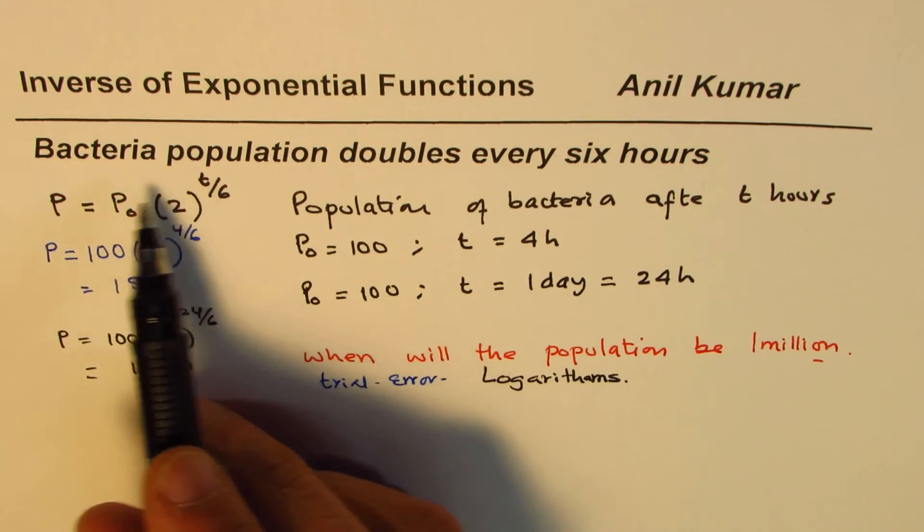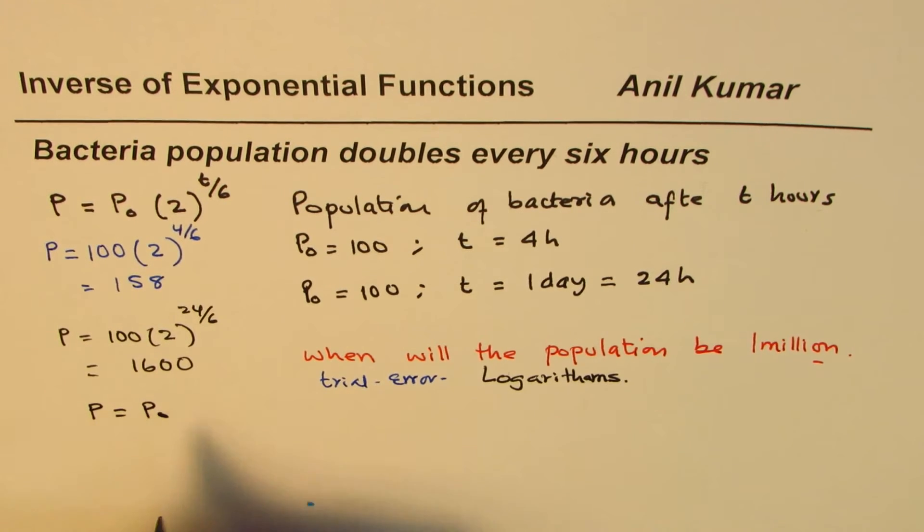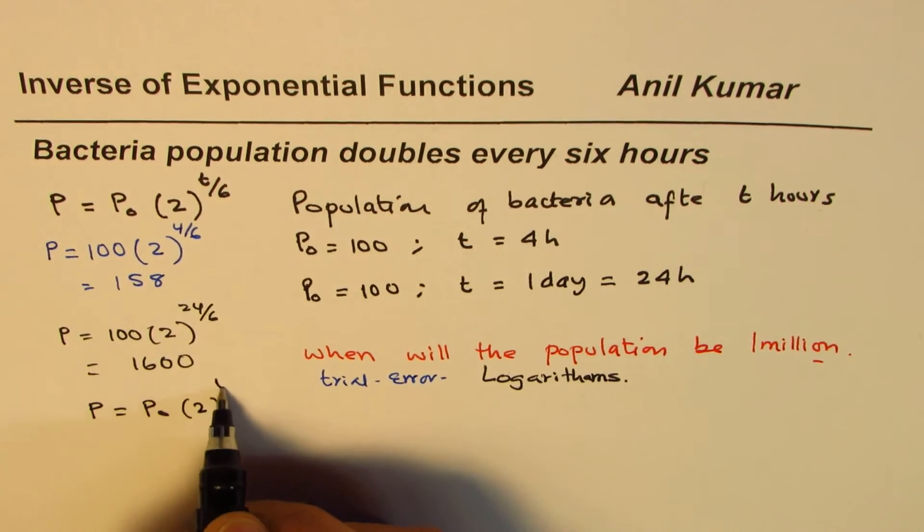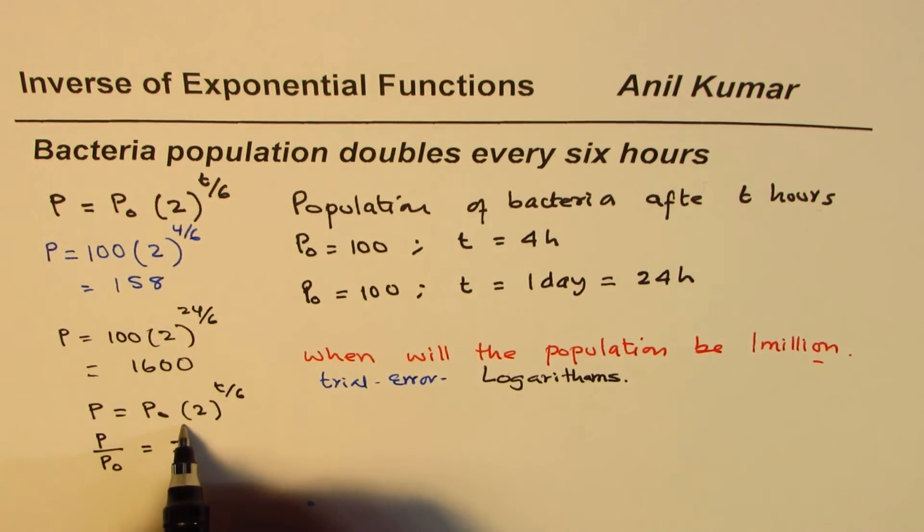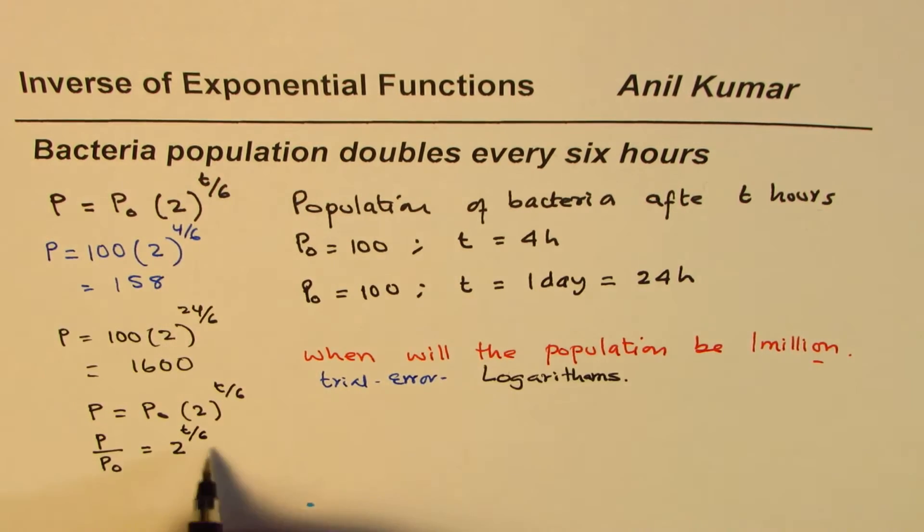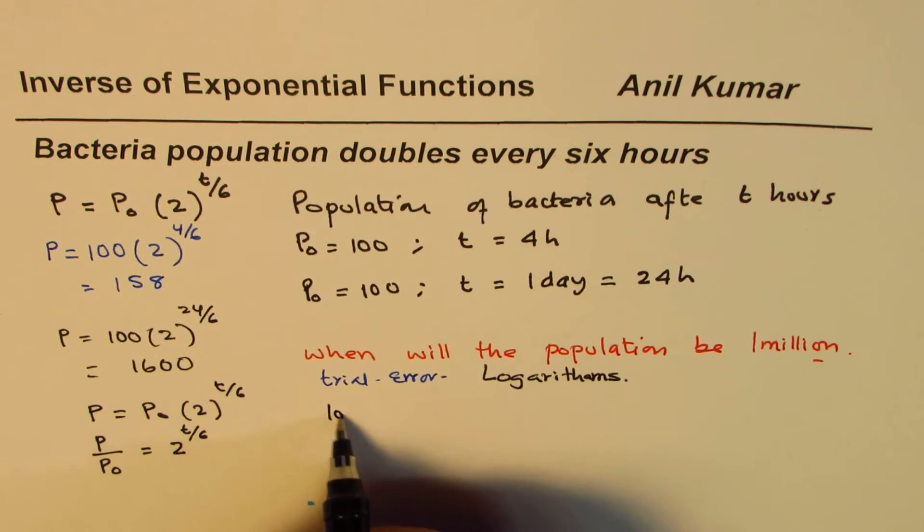So let's rearrange this equation. What we have here is P equals to P0 times 2 to the power of t over 6. So if I rearrange I get P over P0 equals to 2 to the power of t over 6.